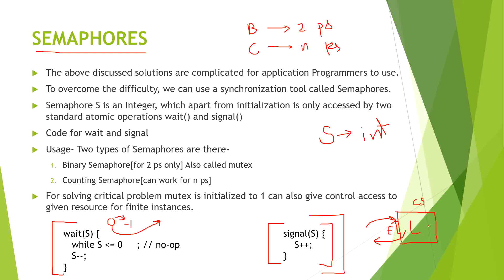In the same way, counting semaphores are also implemented. In that case, the lavatory is changed into one room, and a room can contain more than one person at one time. As each person enters the room, the count is decreased by one. When the room is full — all persons up to the volume of the room are filled in — the flag shows engaged. After someone exits, it signals that the room can take one more person. This is an example of counting semaphore.